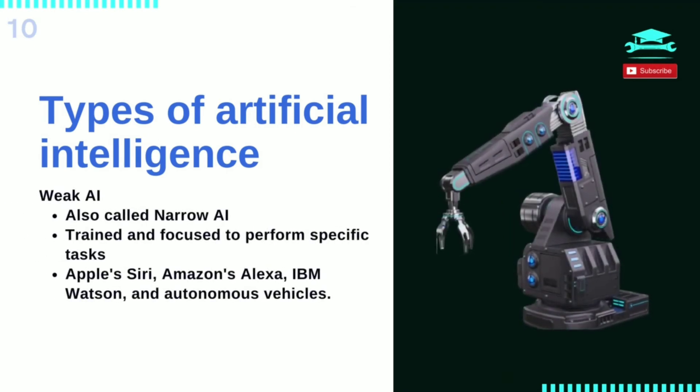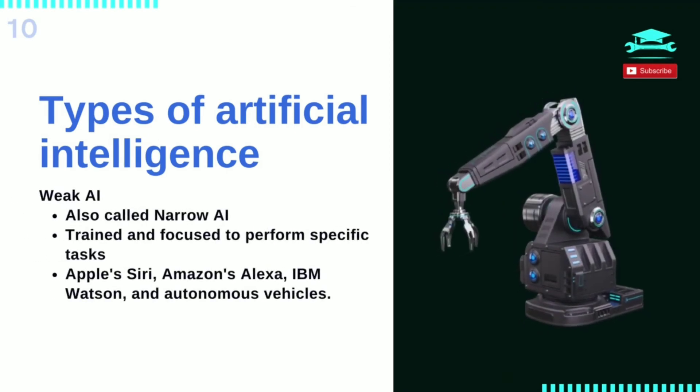Weak AI, also called Narrow AI or artificial narrow intelligence, deals with AI trained and focused to perform specific tasks. Weak AI drives most of the AI that surrounds us today. Narrow might be a more accurate descriptor, as it is anything but weak. It enables very robust applications such as Apple Siri, Amazon's Alexa, IBM Watson, and autonomous vehicles.